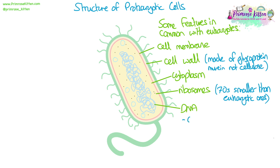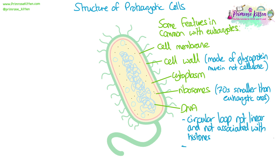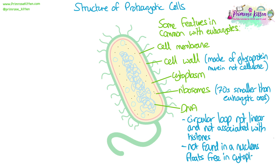They also have DNA. The DNA in prokaryotes is a circular loop — it's not linear and it's not associated with histones. And it's not found in the nucleus; it floats free in the cytoplasm in a region called the nucleoid.